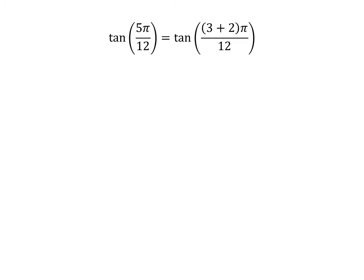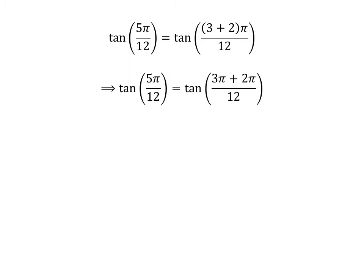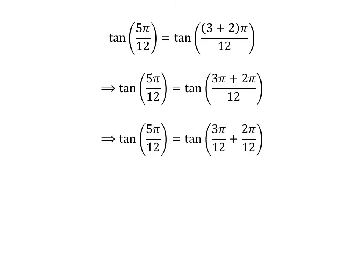We know 3 plus 2 is equal to 5, so tangent of 5 times pi upon 12 is equal to tangent of 3 plus 2 times pi upon 12. Expanding the numerator, we get tangent of 5 times pi upon 12 is equal to tangent of 3 times pi plus 2 times pi upon 12. So the fraction 5 times pi upon 12 can be expressed as the sum of two fractions: 3 times pi upon 12 and 2 times pi upon 12.